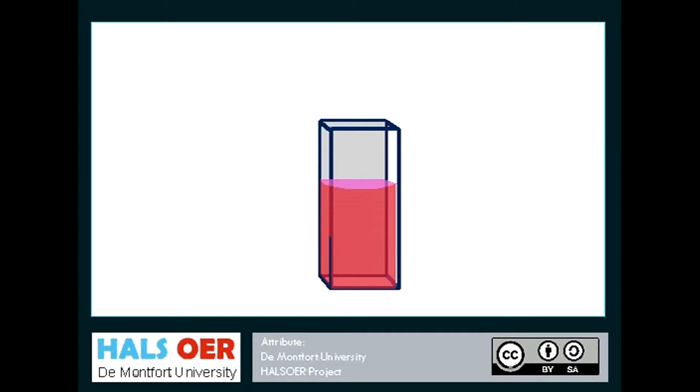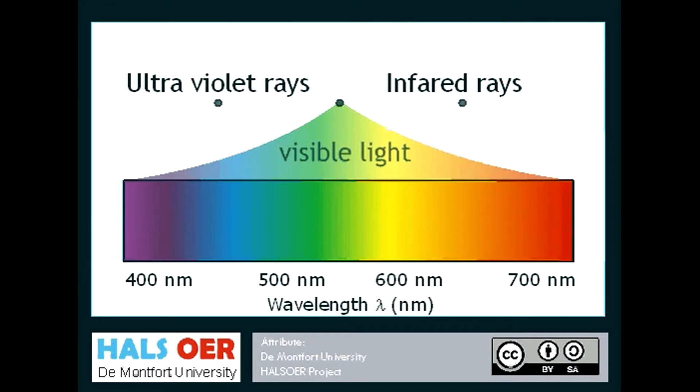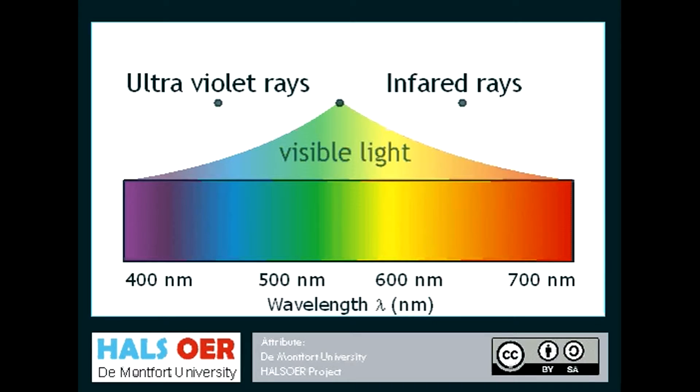But why does this happen? Looking at the electromagnetic spectrum, visible light ranges from violet at a wavelength of 400 nm to red at a wavelength of 700 nm.